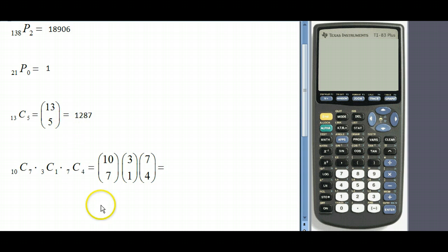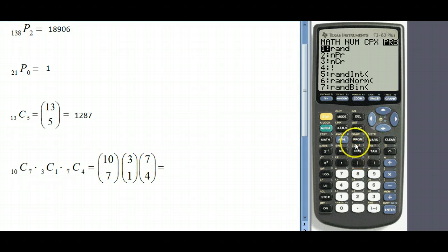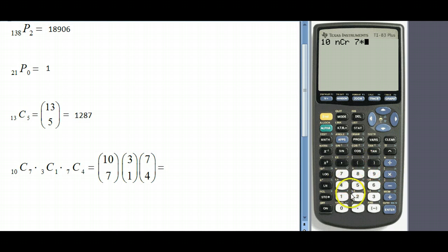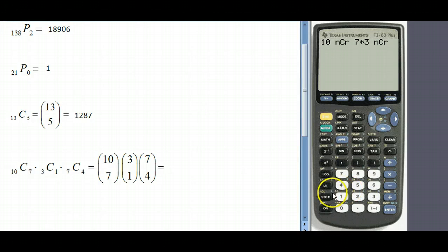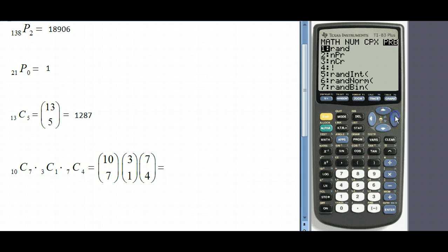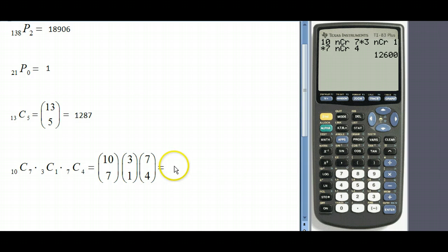So we start off with 10, math, probability, and then since we're doing combination that's option three, seven, and then that's times, and then we'll say three, go back to math, probability, combination, one, and then times seven, math, probability again option three, four, and then hit enter and you see we get 12,600.